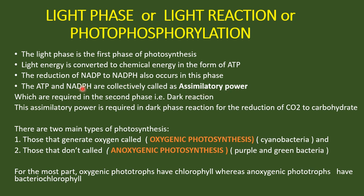The collective of ATP and NADPH is called assimilatory power. This assimilatory power is required in the second phase for the fixation of atmospheric carbon dioxide and converting it into the form of carbohydrate. So in the light phase we have the generation of chemical energy as well as reduction energy, that is NADPH, which together we call assimilatory power.